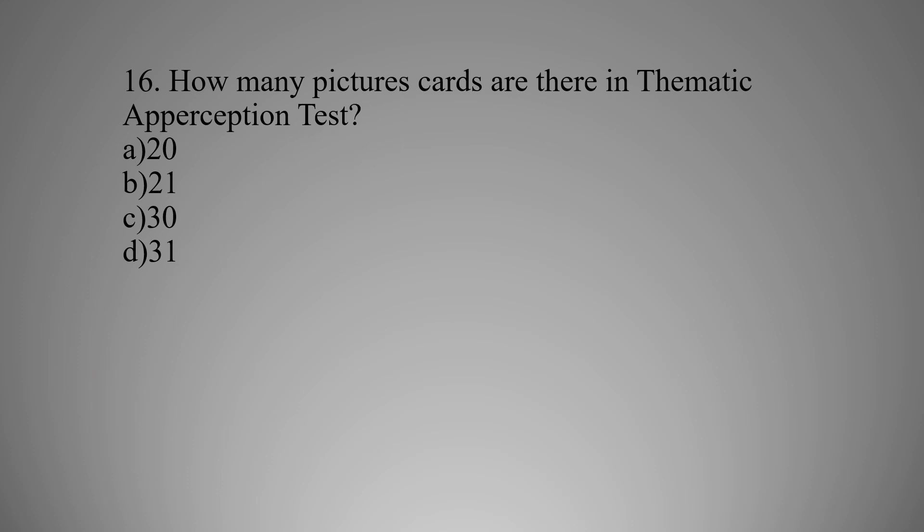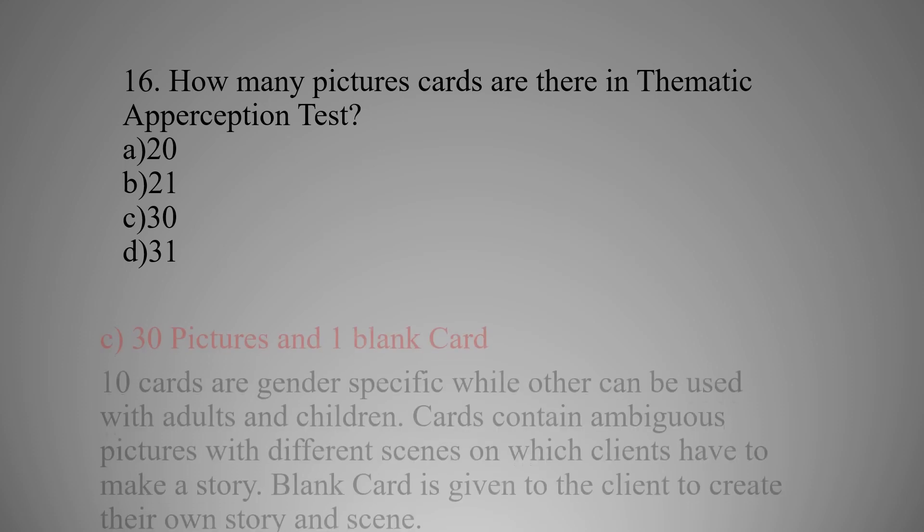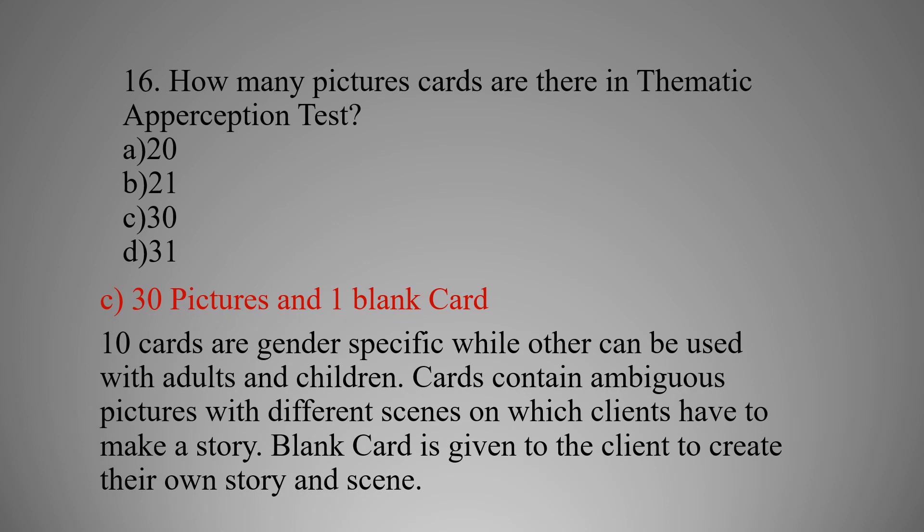MCQ number sixteen: How many picture cards are there in the Thematic Apperception Test? Option A: 20, Option B: 21, Option C: 30, Option D: 31. The right option is C — 30 pictures and one blank card, so basically 31. Ten cards are gender-specific while others can be used with adults and children. Cards contain ambiguous pictures on which the client creates a story, and the blank card is given for them to create their own scene.